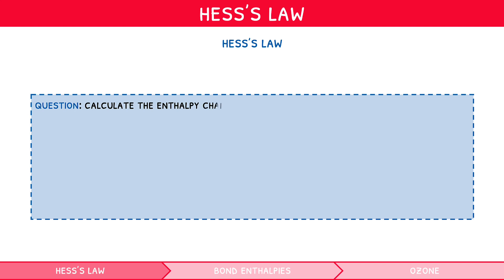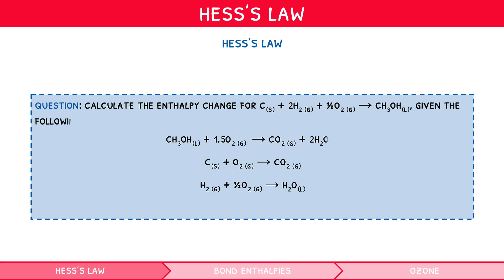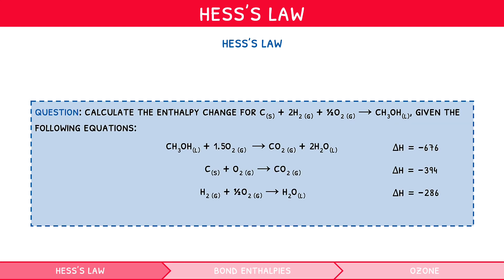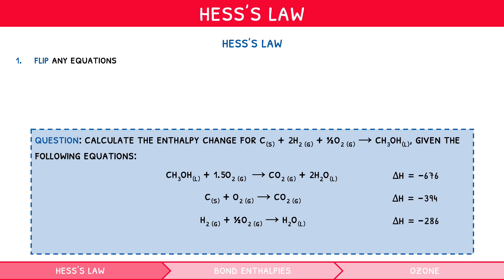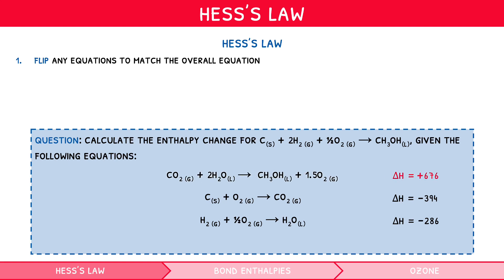Calculate the enthalpy change for C + 2H₂ + ½O₂ → CH₃OH, given the following equations. First, flip the given equations around so that the products and reactants match the overall equation, being sure to flip the sign of delta H for each. In the first equation, methanol is a reactant when it should be a product, so we flip it. Then in the second and third equations, the species align, so we leave them.